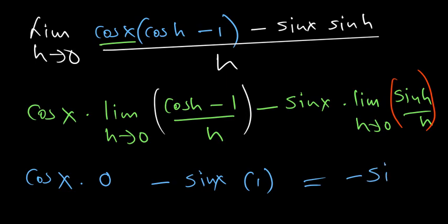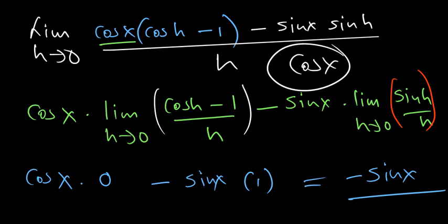So you basically end up having negative sine of x as a result. That is actually the derivative of cosine of x from first principles. I hope you've understood. Give us a comment if you have.